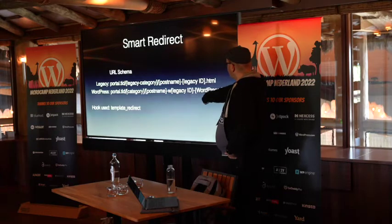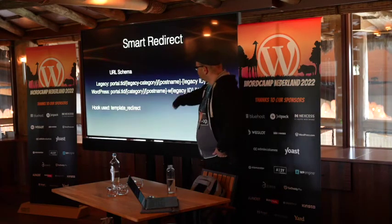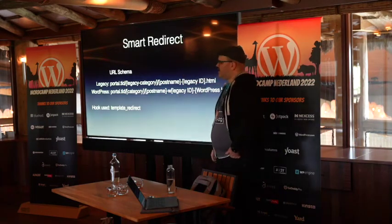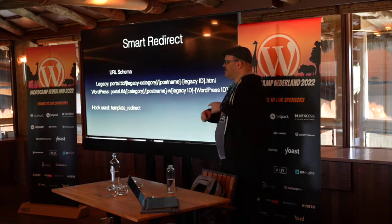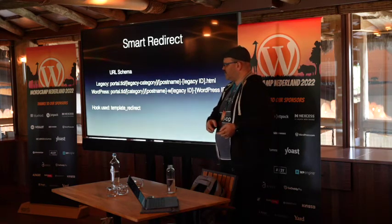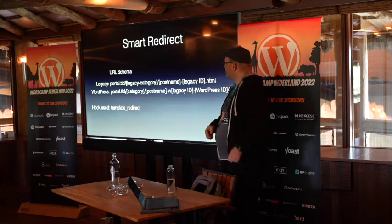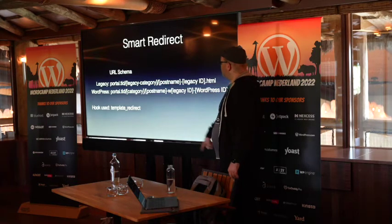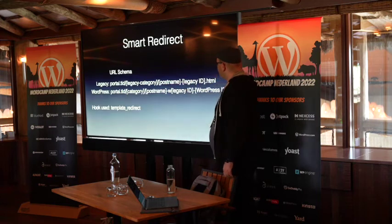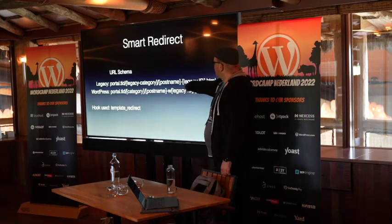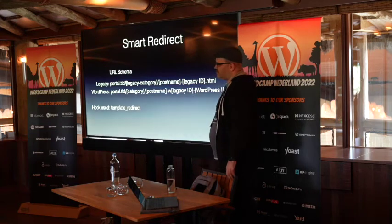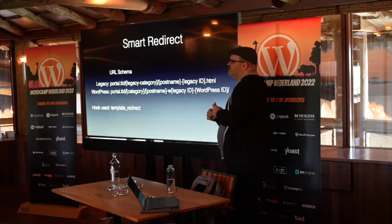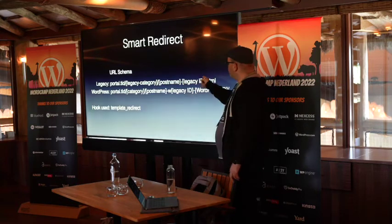I first check for the WordPress ID, then for the legacy ID, then for the post name. If I find something that exists in my system, I redirect to the post I find. If I go to the legacy URL, there's a legacy ID, I find the actual post, and I have a redirect with a single hop from the old ID URL to the new URL.